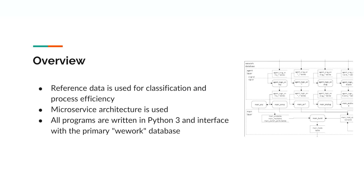Reference data is the only manual data entry necessary and allows for easy classification and process efficiency. Standardized naming schemes keep everything organized and allow for automations as well as external applications to use the data. Everything is done with microservice architecture, and all of the backend is done with Python and SQL queries. A primary database is used to store everything.